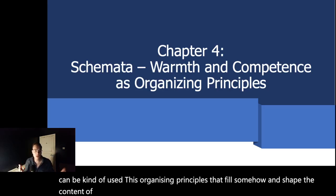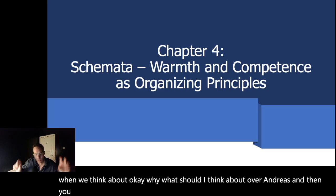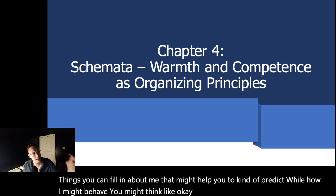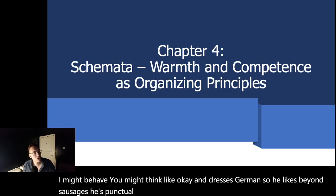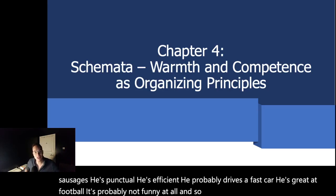So schematas are very useful to think about when we consider what to think about Andreas. You might think, Andreas is German, so you have a lot of things you can fill in about me that might help you predict how I might behave. You might think Andreas is German, so he likes beer and sausages. He's punctual, he's efficient, he probably drives a fast car, he's great at football, he's probably not funny at all, and so forth. You have a very complex picture of me just because you know that I'm German. So there's this schema.